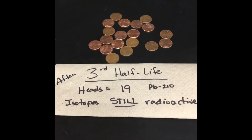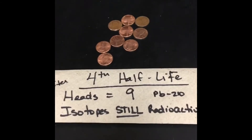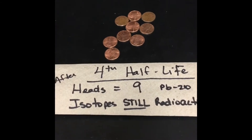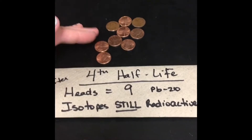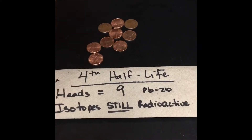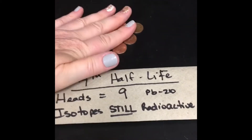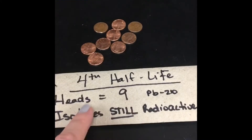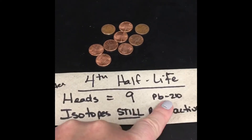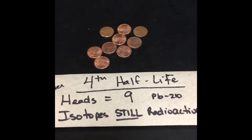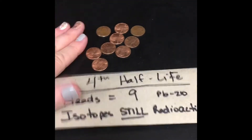Next we'll have the fourth half-life. We did another time warp — another 22 years — and now we've come to the end of our fourth half-life. I removed the ones that radioactively decayed into something more stable. My remaining pennies on heads are still radioactive, and there are nine of those. I'm going to do my next time warp — 22 years — and we'll see how many are remaining for my fifth half-life.